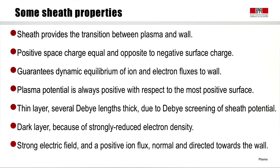With these very simple qualitative arguments, we can already make a list of sheath properties. The sheath provides the transition between the plasma and the wall. The positive space charge is equal and opposite to the negative surface charge. The sheath guarantees a dynamic equilibrium of ion and electron fluxes to the wall. The plasma potential is always positive with respect to the most positive surface.